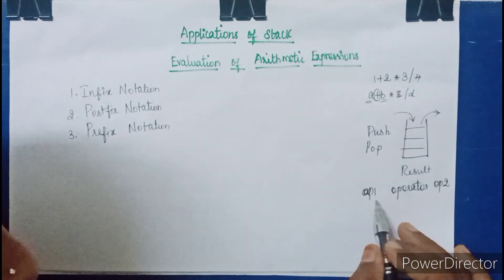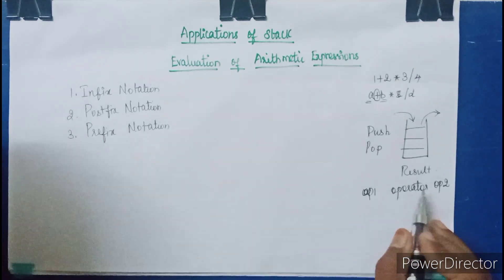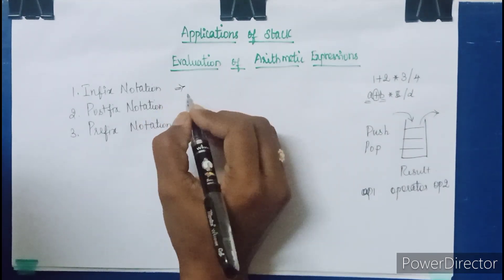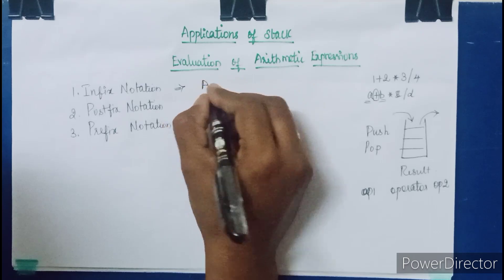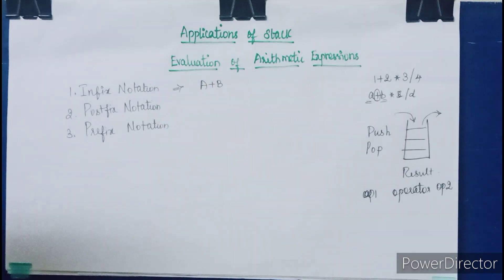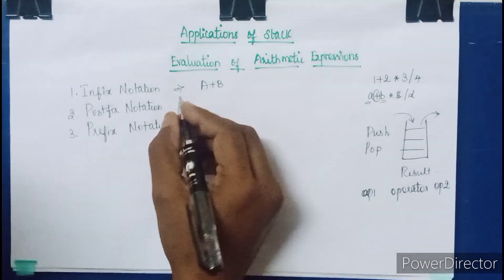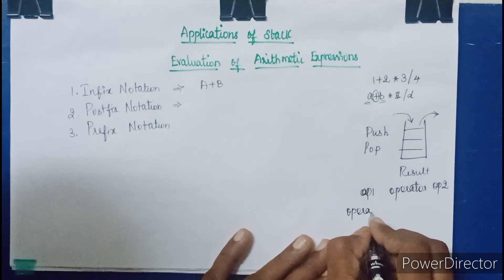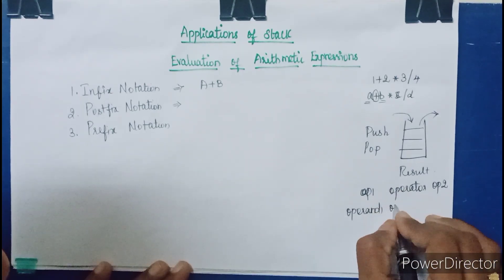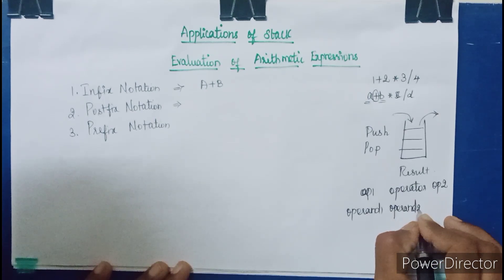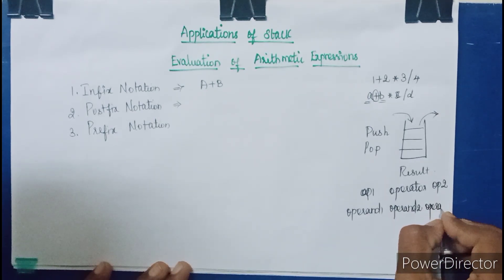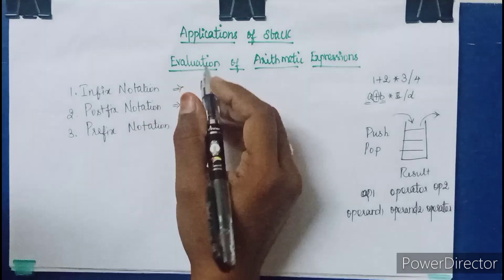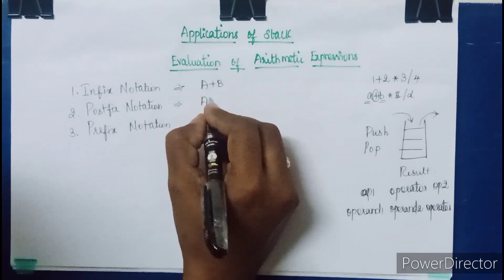So the infix notation format is: operand 1, operator, operand 2. An example is A plus B. Coming to postfix notation, the format is: operand 1, operand 2, then operator. An example of postfix notation is A B plus — the operator comes after both operands.